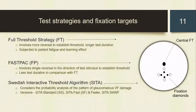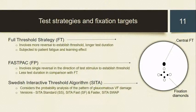Test strategies include full threshold, fast pack, and SITA. Under the SITA strategy, it can be SITA Standard, Fast, Faster, or SWAC. After the introduction of SITA, older strategies are seldom used because of their long test durations. Zone 1 also gives detail about the type of fixation target — central target, small or large diamond — as well as the size of peripheral stimuli, whether size 3 or 5, chosen based on the patient's visual status.